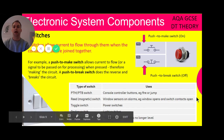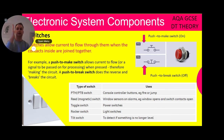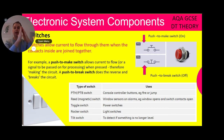Switches allow a current to flow through them when contacts inside are joined together. In this case, we've got a light switch — this is the electrical component and this is the switch — and when they're together that's when you get on and off. The current flows through the contacts that are inside. For example, a push to make switch: I've pushed to make — the switch allows current to flow through, or a signal to be passed on for processing, when pressed. So I've pressed that switch, therefore it makes the circuit.